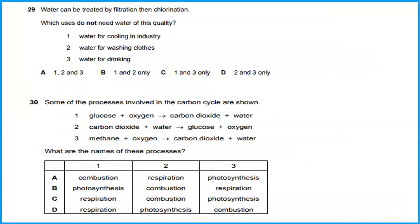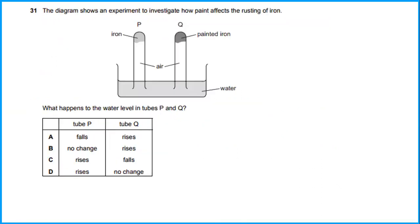Question 29. Water can be treated by filtration then chlorination. Which users do not need water of this quality? The answer will be water for cooling in industry and water for machine boilers. Some of the processes involved in the carbon cycle are shown. Process 1 is respiration, process 2 is photosynthesis, and process 3 is combustion. So the answer will be D. Question 31, the diagram shows an experiment to investigate how they affect the rusting of iron. What happened to the water level in tubes P and Q? P will rise and Q will be no change. So the answer will be D.